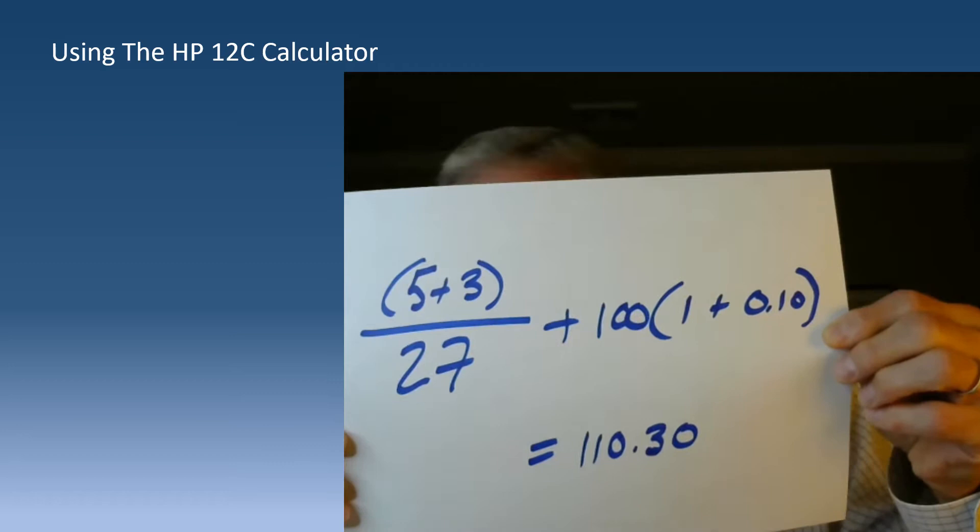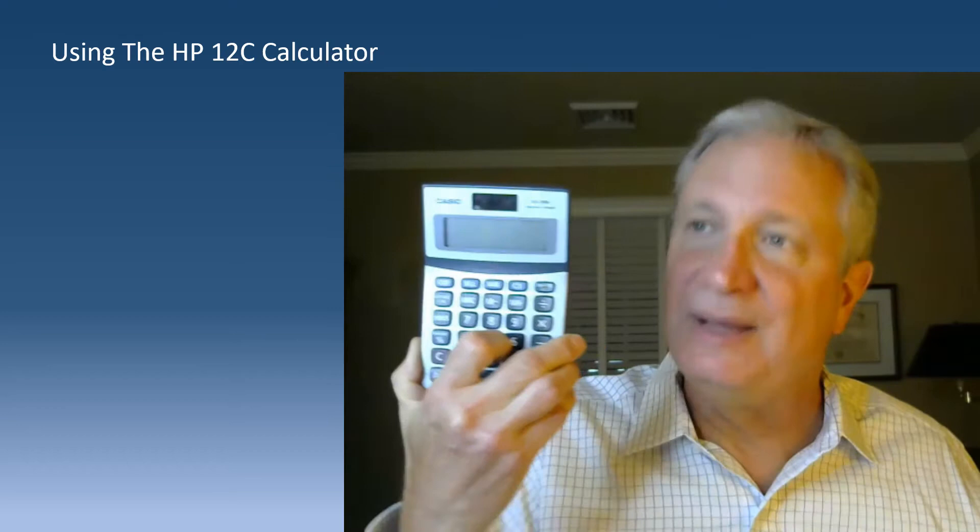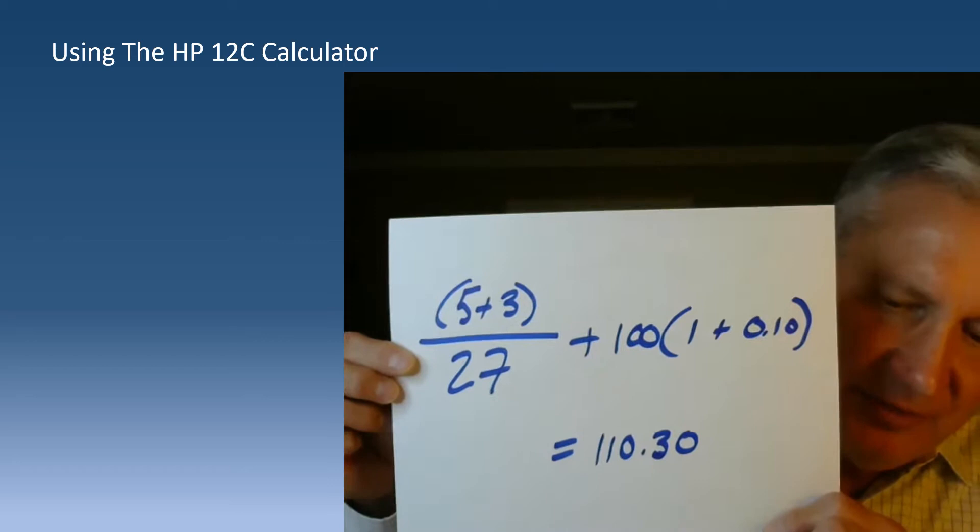Here's an example - just a simple algebra problem. If I had to do this with a regular calculator - and I'm exaggerating a little - I'd do 5 plus 3 equals, divided by 27, then store that. Then clear, 100... no, clear and do 1 plus 0.1 equals, times 100 equals, plus memory equals. It gets complicated with parentheses. But watch - with this calculator I do 5, enter, 3, plus, and I'll show you how to do this in the rest of the video.